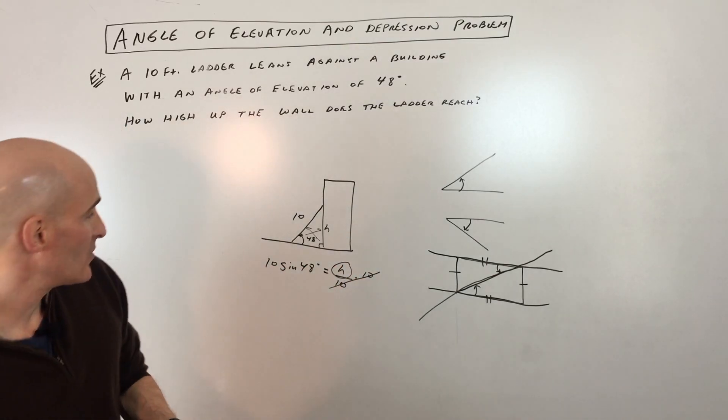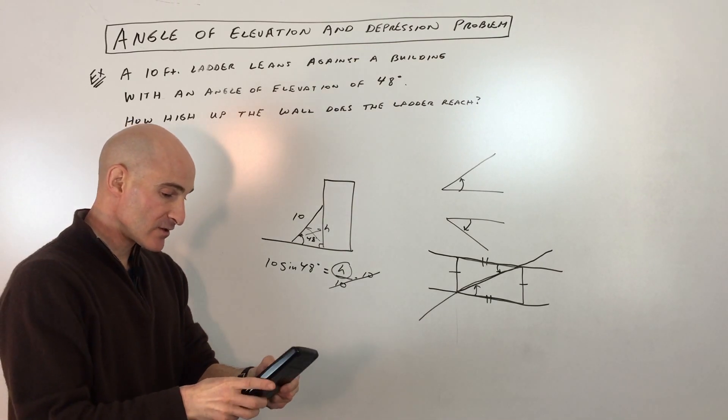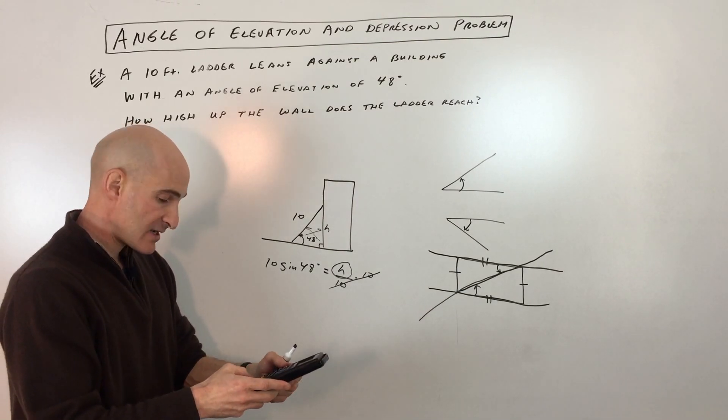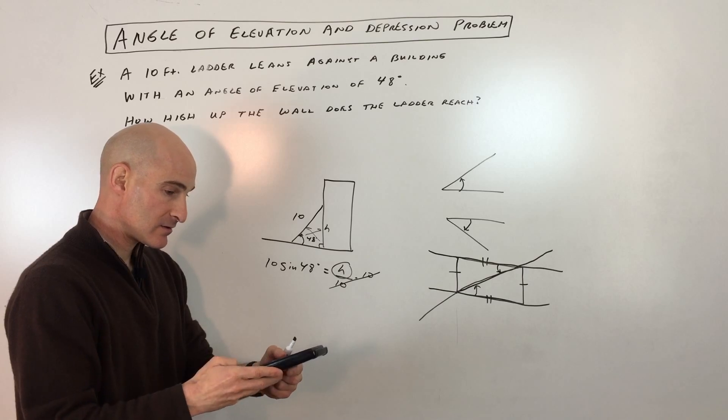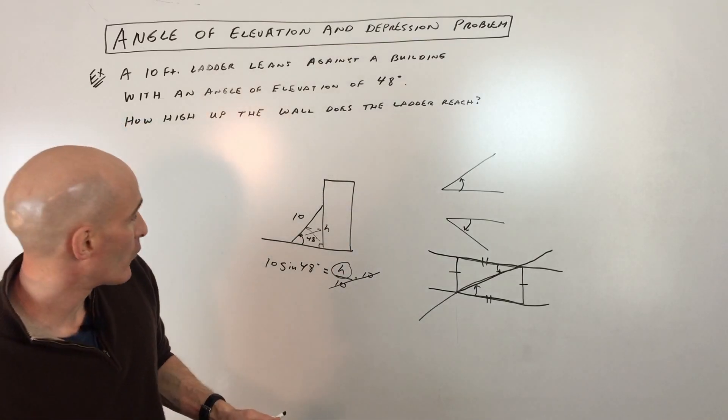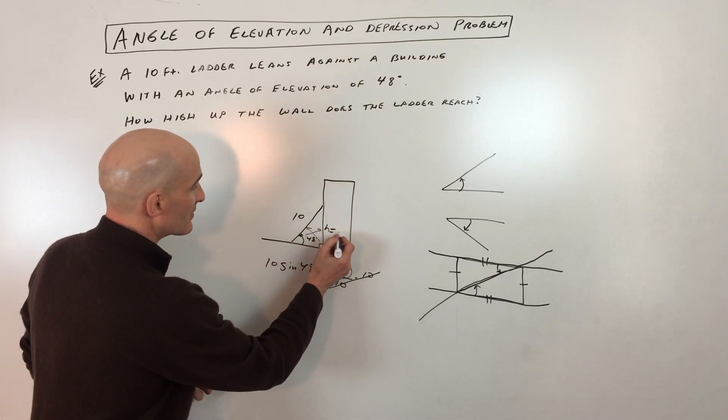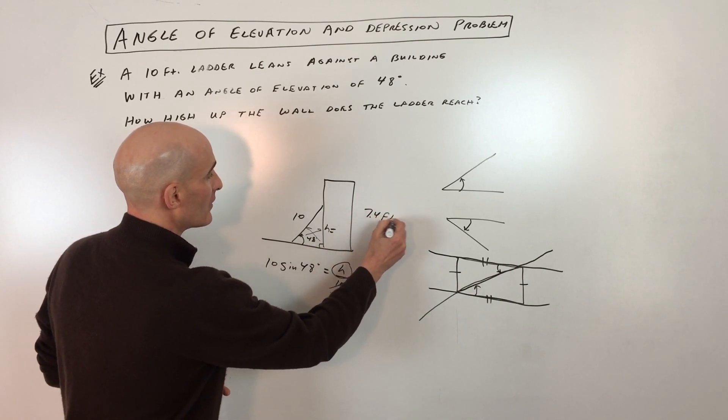So let's go to the calculator. Let's see what that is. We've got 10 times the sine of 48. So it's about 7.4 feet. That's how high up it's reaching right there. So 7.4 feet.